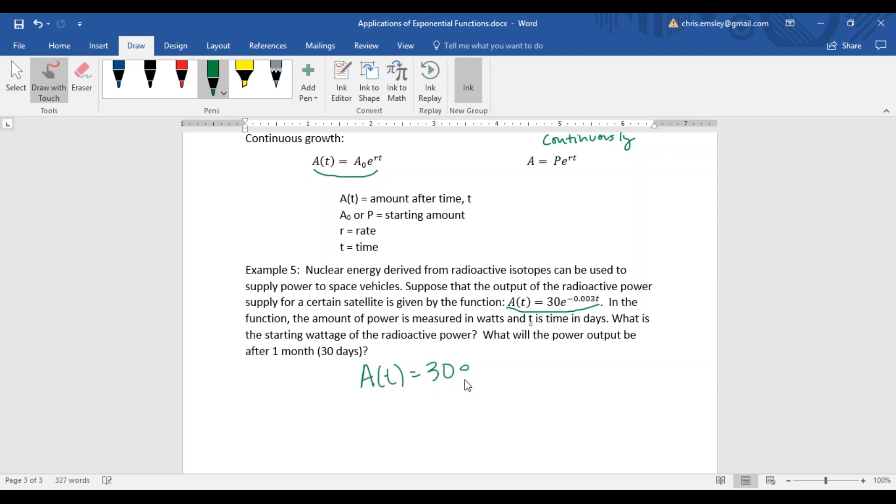For that first question, we don't need to do any calculations, we just need to understand our formula. Compare this formula, our problem, to the format I have up here at the top, and notice that the number in place of A sub zero, A sub zero is our starting amount, is 30. So that means this radioactive power supply is starting at 30 watts.